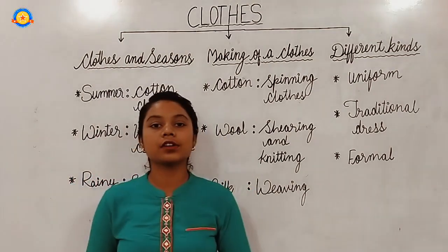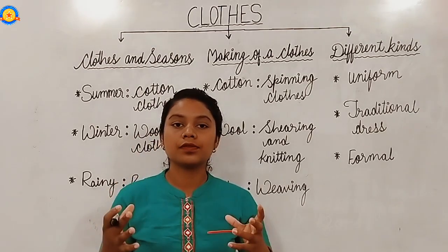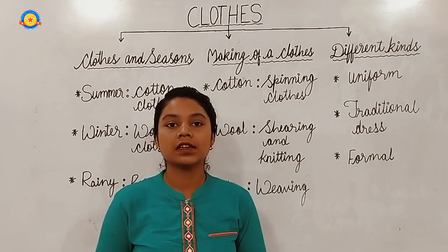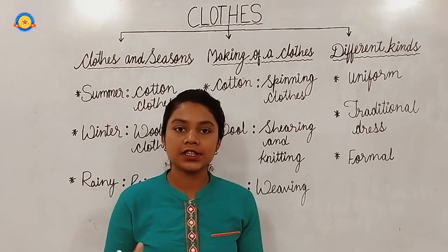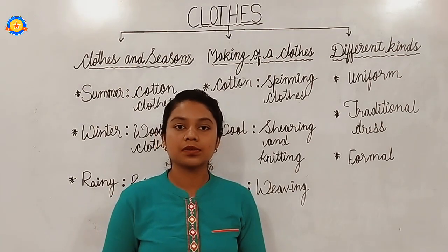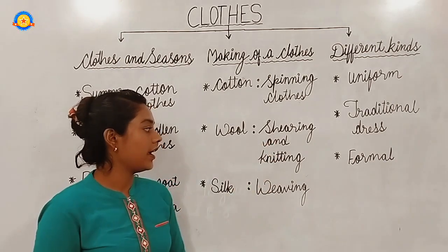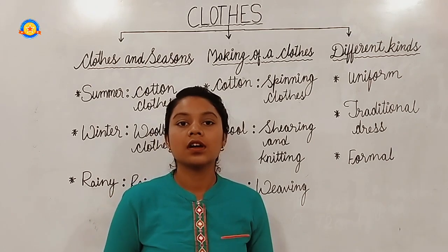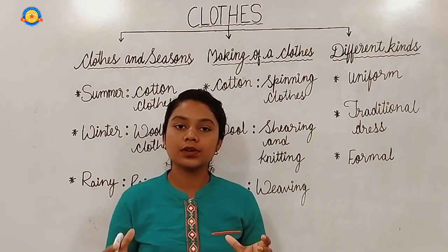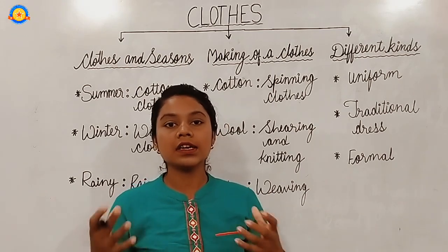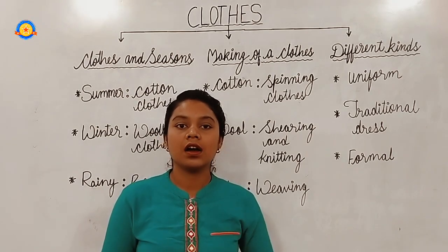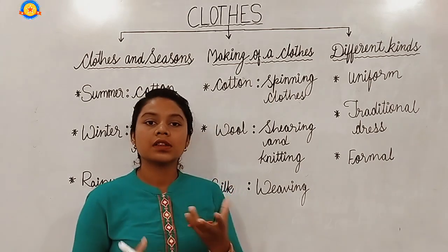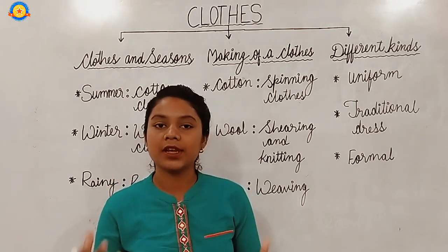Next, we have wool — woolen clothes. From where do we get wool? We get it from the sheep's hair. The process by which the sheep's hair is collected is known as shearing. The sheep's hair is cleaned and made into woolen thread in machines. This woolen thread is used to make woolen clothes like sweaters, caps, socks, etc.